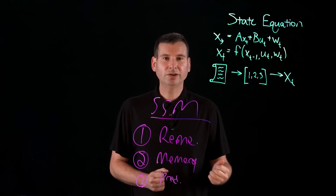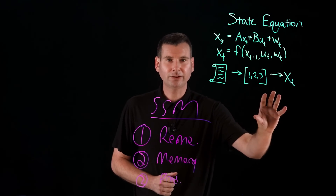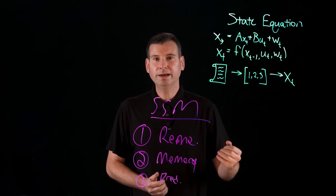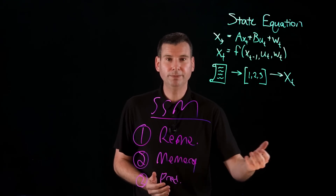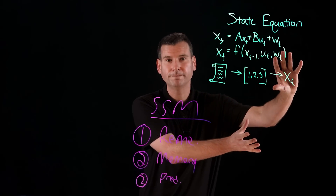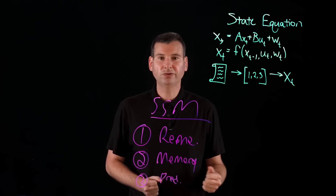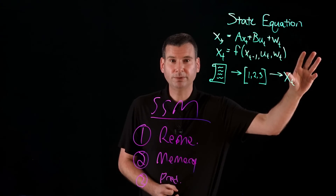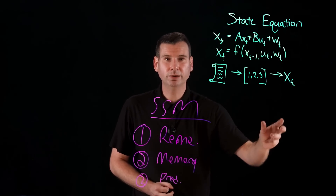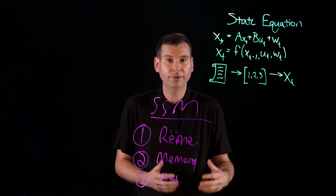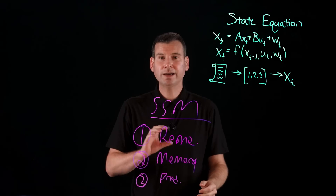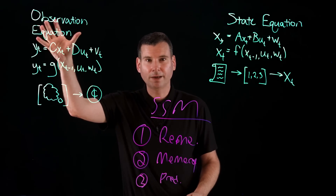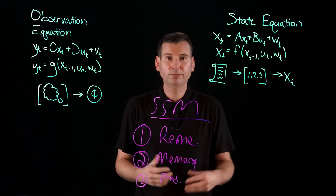Now let's link this to generative AI. If we take text as an example, we first create what's called an embedding. This embedding is an input into the model to update its hidden state, or evolving memory. The optional input U sub T could be the prompt embedding. Interestingly, W sub T can be that random variability that enables the model to be very creative. The second part of the equation is called the observation piece, which maps the hidden state to the observed output.